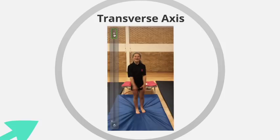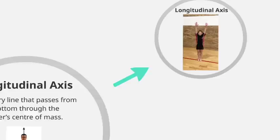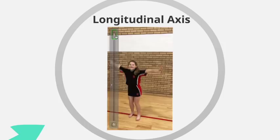Finally, we have the longitudinal axis — an imaginary line that passes from top to bottom through the performer's centre of mass. We can see the centre of mass identified, with that line passing through the top of the head, straight through the body, and down towards the feet. A great example of the longitudinal axis in rotation is the pirouette, where the performer twists around that longitudinal axis.